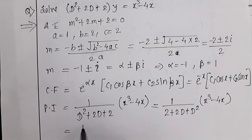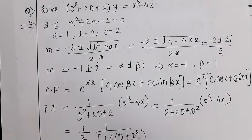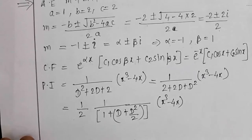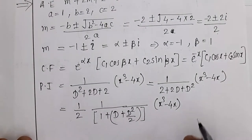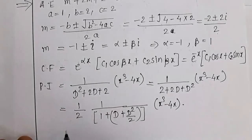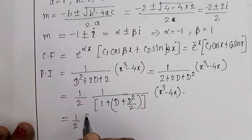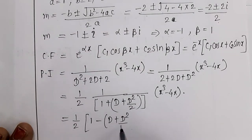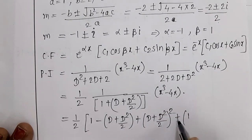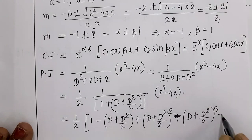Taking the constant outside: (1/2) × 1/(1 + (D + D²/2)) × (x³ - 4x). This is in the form 1/(1 + D), so we expand with alternating signs: (1/2)[1 - (D + D²/2) + (D + D²/2)² - (D + D²/2)³ + ...] × (x³ - 4x).